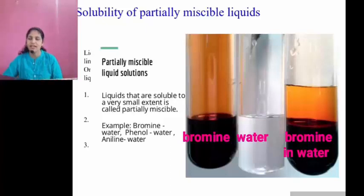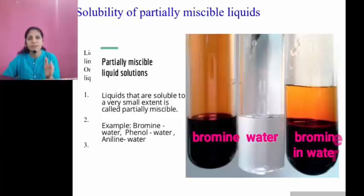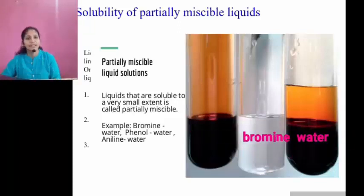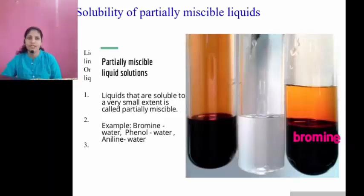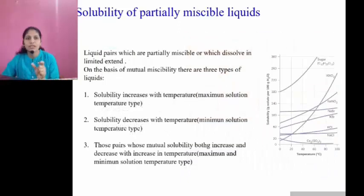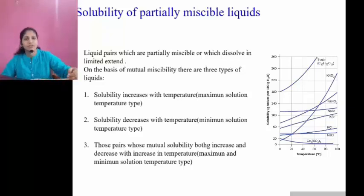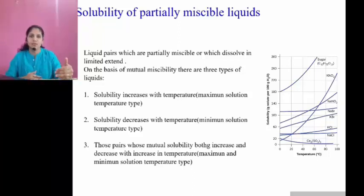Partially miscible liquids are liquid pairs which are partially miscible or which dissolve in limited extent. As already explained, on the basis of mutual solubility there are three types. In type one, solubility increases with increasing temperature — that is the maximum solution temperature type. As we increase the temperature of the solution, the solubility of different compositions will increase.